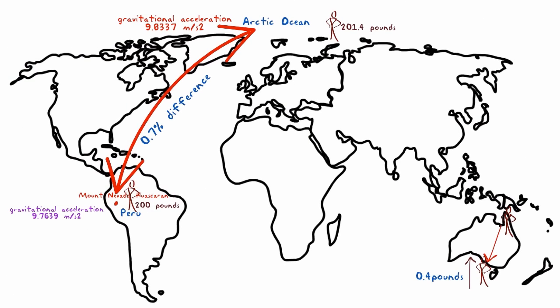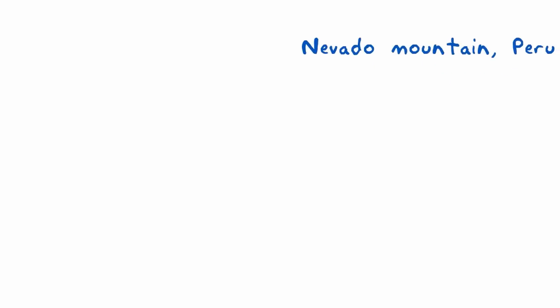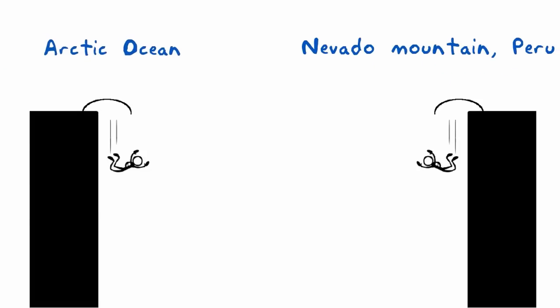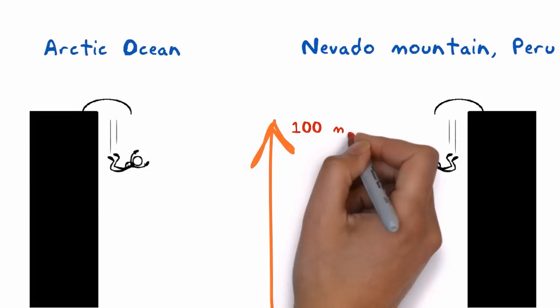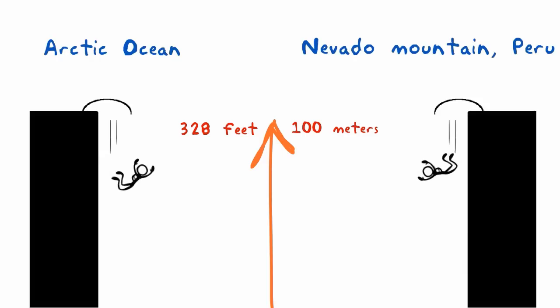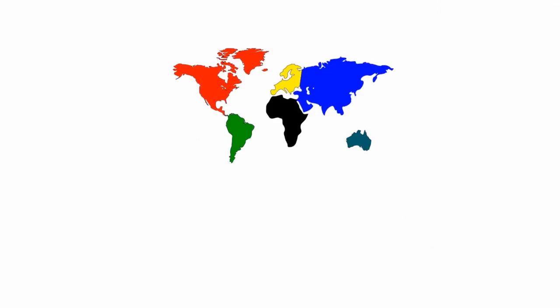These differences in gravitational acceleration mean that if you were falling from a height of 100 meters, you would hit the surface at Nevado Mountain in Peru about 16 milliseconds later than at the Arctic Ocean. No matter where you are right now and what your weight is, thanks for watching!